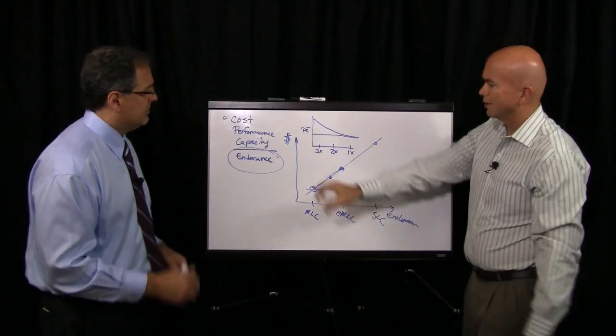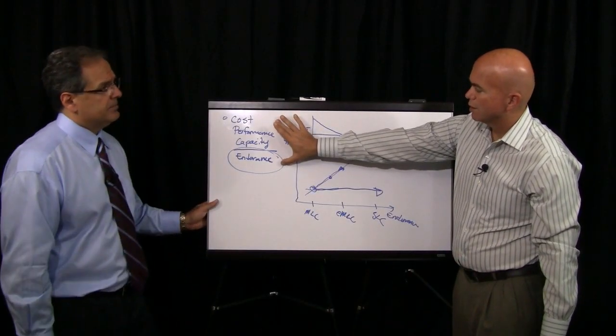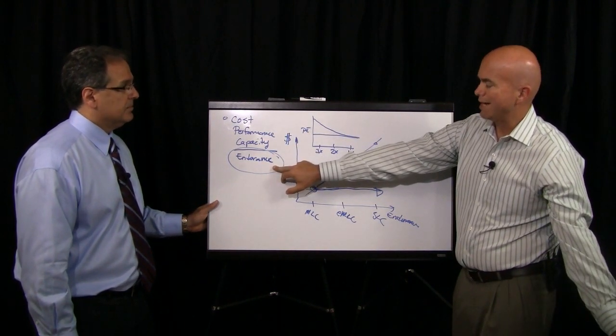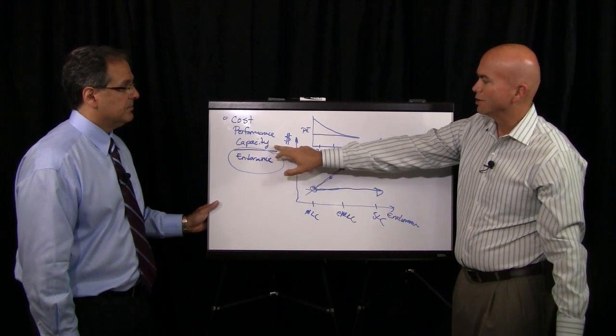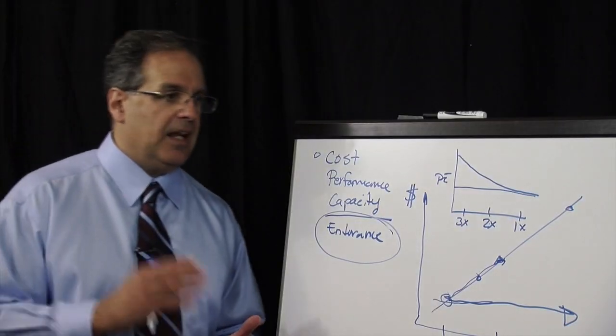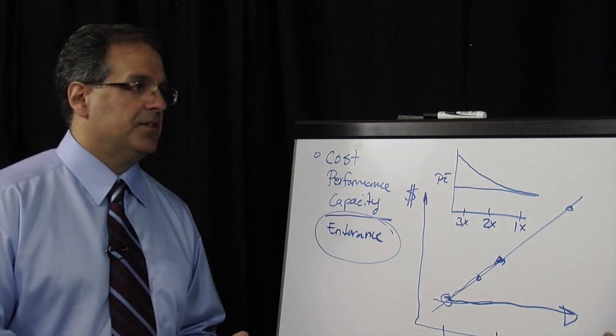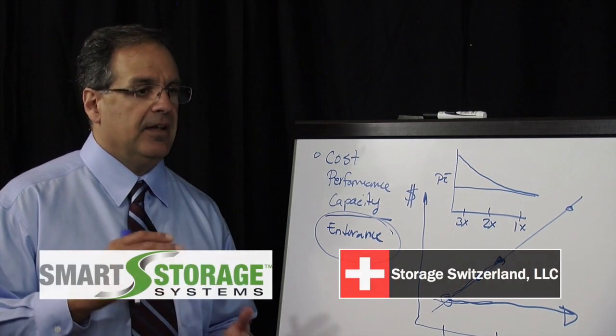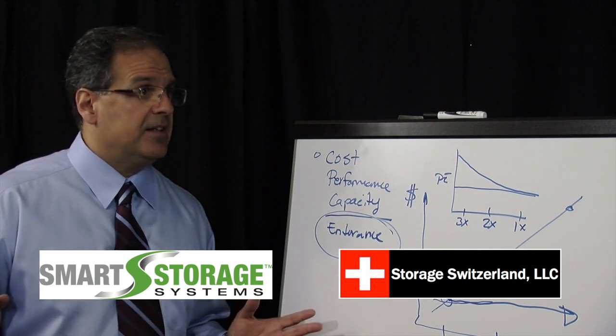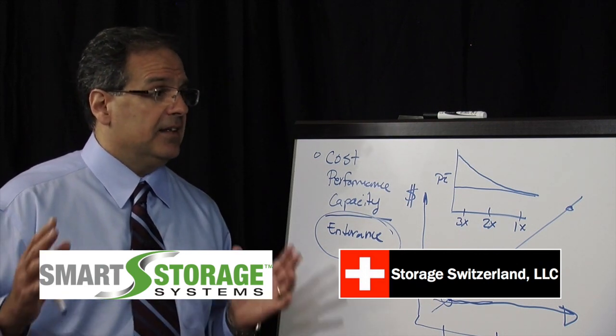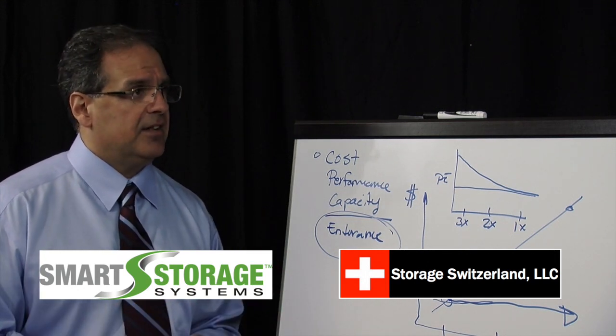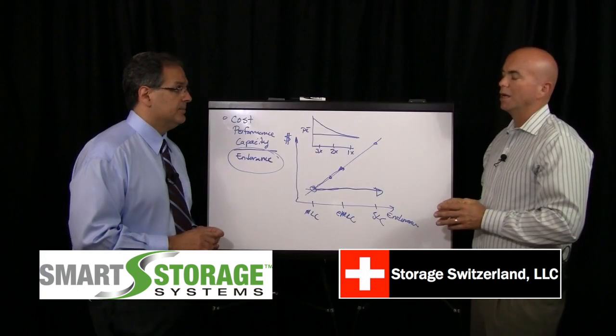Okay. So going all the way back up to the top, it seems like what we want to do is change our order here. We want to start people looking at endurance first, matched to their application and then start worrying about capacity, performance and cost. Absolutely. And again, anywhere from a video server to a file server to a virtual desktop, all the way up to online transaction processing requires very different amounts of writing. And unless you're really tuned into exactly what your application is, you can make a big mistake.